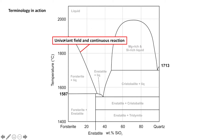Our liquidus represents a univariant field, meaning there is one degree of freedom. If we know the temperature, we know the composition. For example, if the temperature is 1800 degrees Celsius, we hit a point on the system and our composition is fixed there. These are examples of continuous reactions because the solid is constantly changing composition during the evolution of the system.